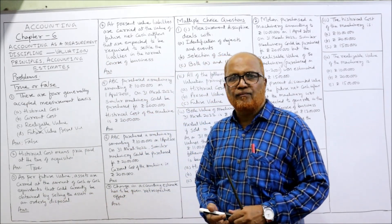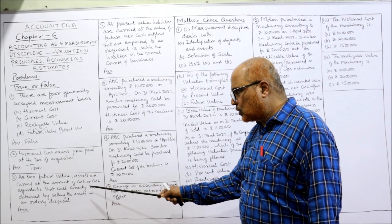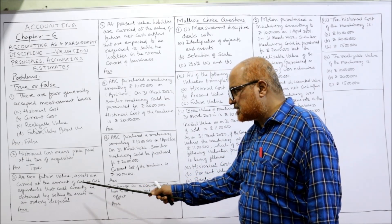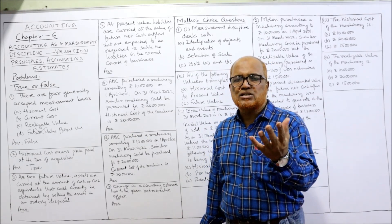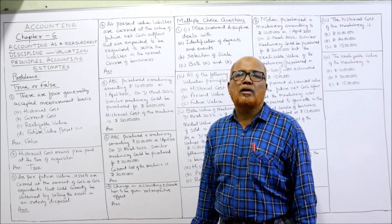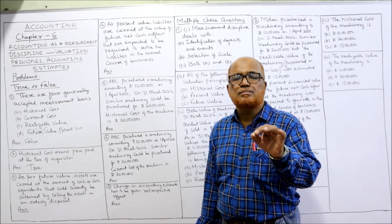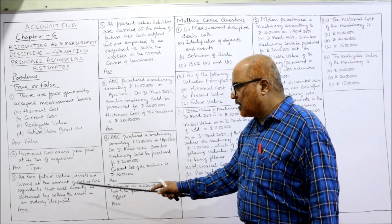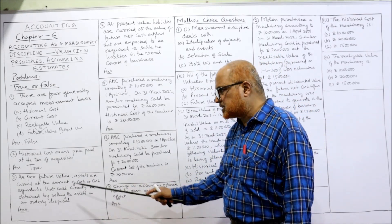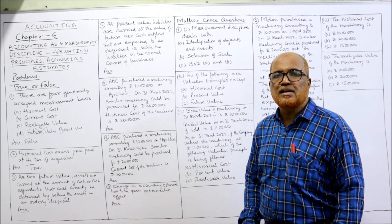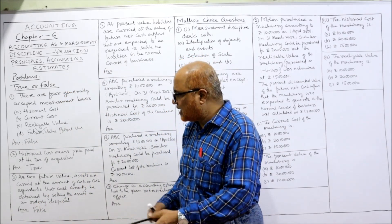Next: the statement says 'as per future value, assets are carried at the amount of cash or cash equivalent that could currently be obtained by selling the asset in an orderly disposal.' This is FALSE. When an asset is sold in an orderly disposal and the cash or cash equivalent realized is recorded, that is called realizable value, not future value. The statement given is actually the definition of realizable value but is labeled as future value.